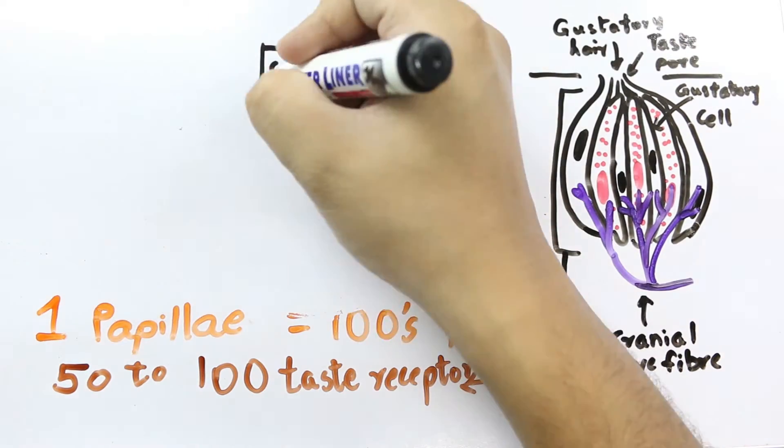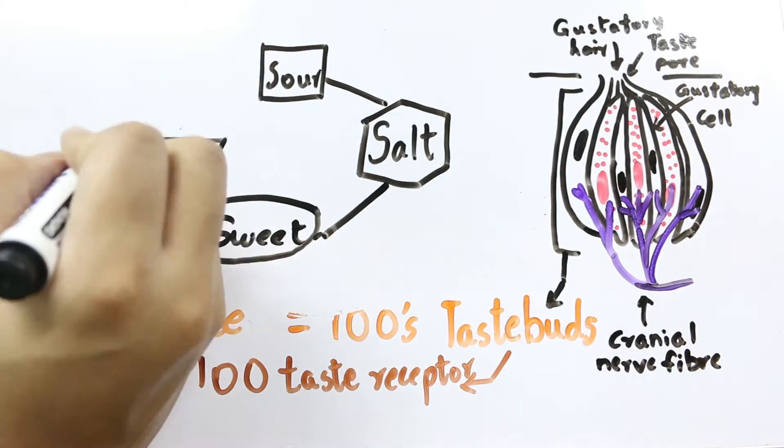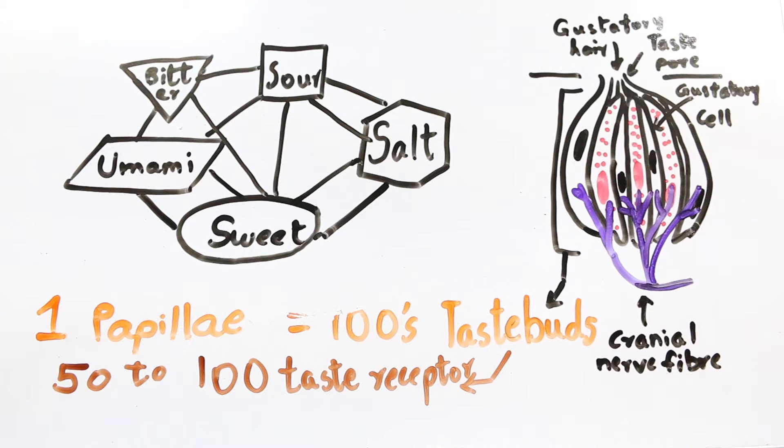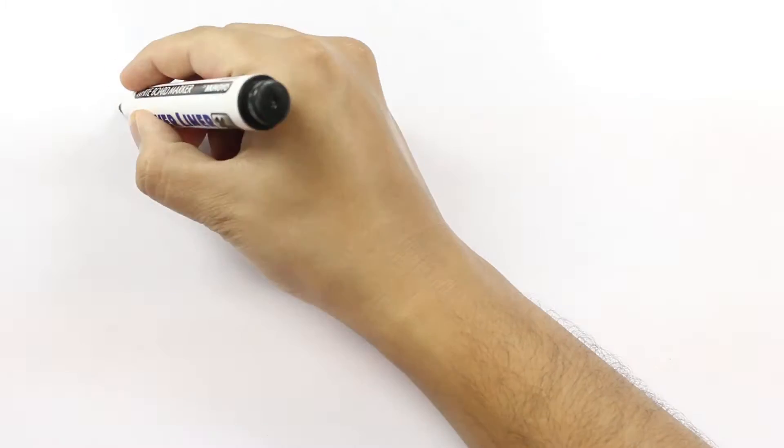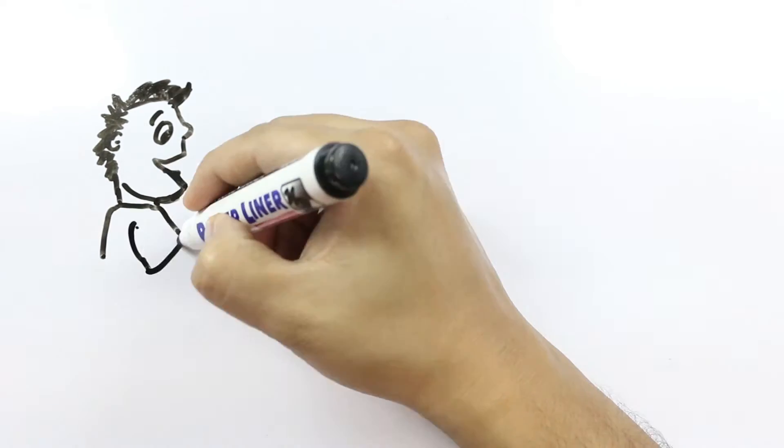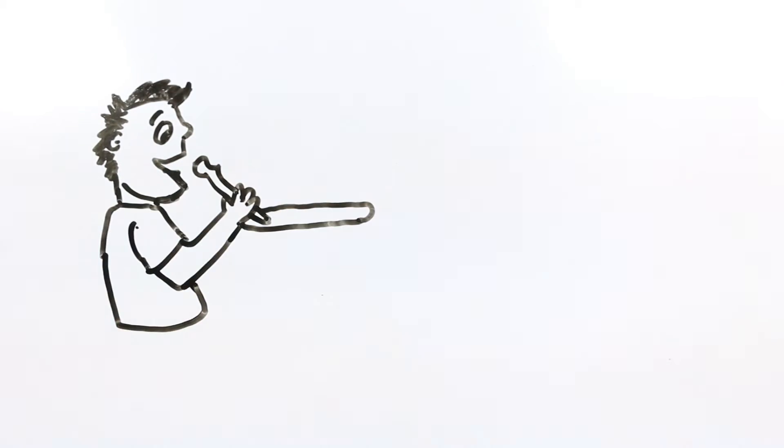The sensation of taste can be categorized into 5 basic tastes: sour, salt, sweet, umami and bitter. Taste buds are able to differentiate among different tastes through detecting interactions with different molecules or ions.